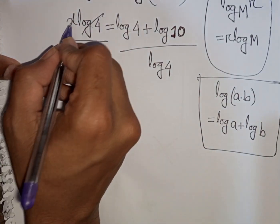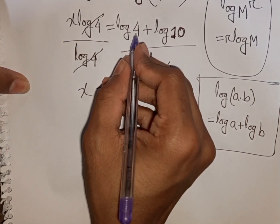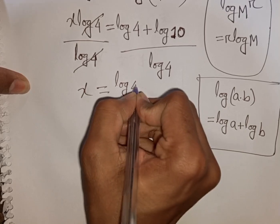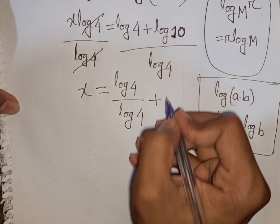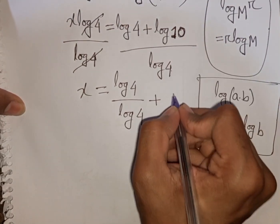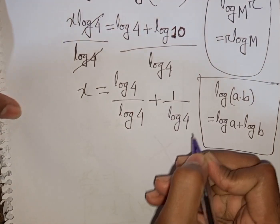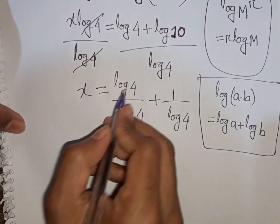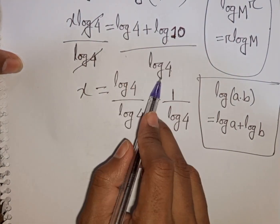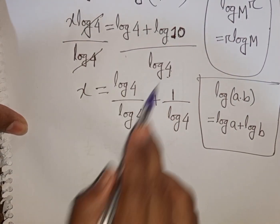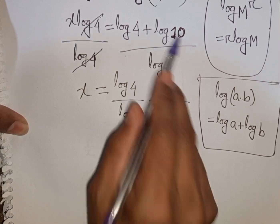So we have x is equal to log 4 plus log 10, all over log 4. Now, log 10 is equal to 1. So the expression becomes log 4 plus 1, over log 4.